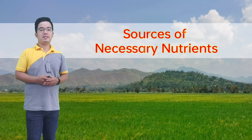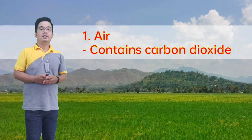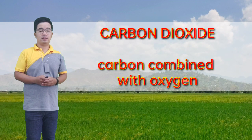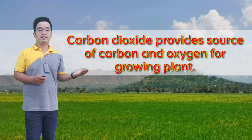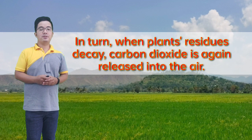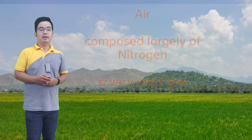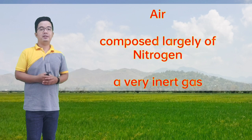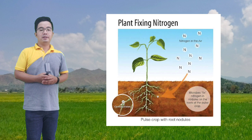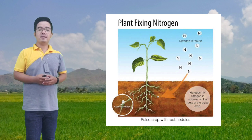Plants have three sources from which they get their necessary nutrients. First, we have the air. The air contains carbon dioxide, which is a combination of carbon with oxygen. Carbon dioxide provides a source of carbon and oxygen for growing plants. In turn, when plant residues decay, carbon dioxide is again released into the air. The air around us is composed largely of nitrogen, bearing inert gas. Although nitrogen is needed in large amounts by plants, nitrogen from the air cannot be used by the growing plant.